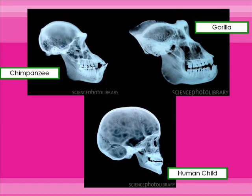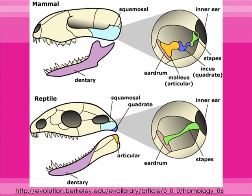Another example of homologous structures is the shape of skulls and the pieces of bones within them. Here you have a chimpanzee skull, a gorilla skull, and a human child skull. Each of these organisms has a two-piece jaw — a mandible and a maxilla. The bottom piece is a lot thicker on the chimpanzee and gorilla than on the human, even though they're very similar. I also found a really neat picture from the University of Berkeley showing a mammal ancestor and a reptile ancestor with differently colored bones that match up as homologous structures.